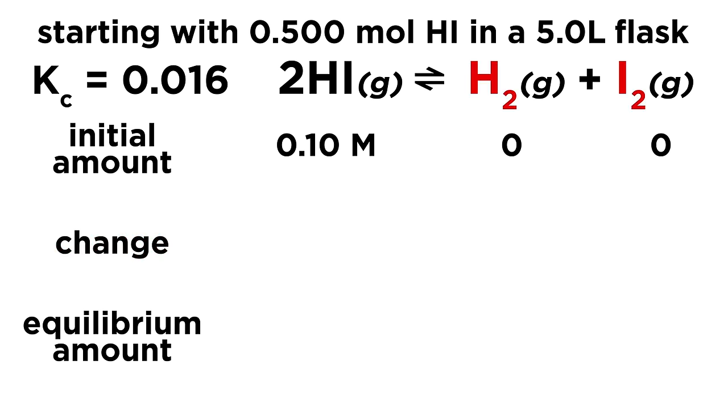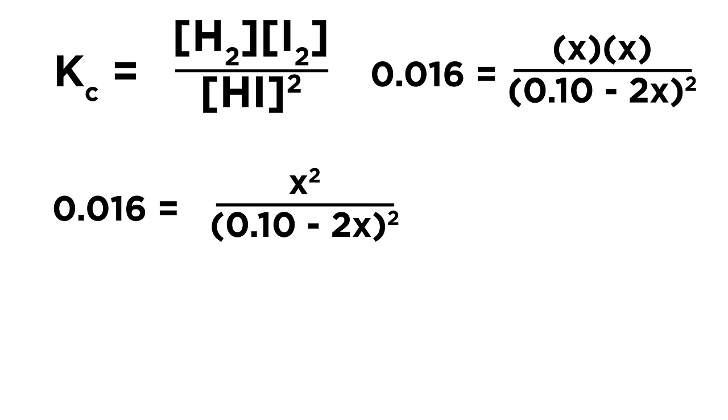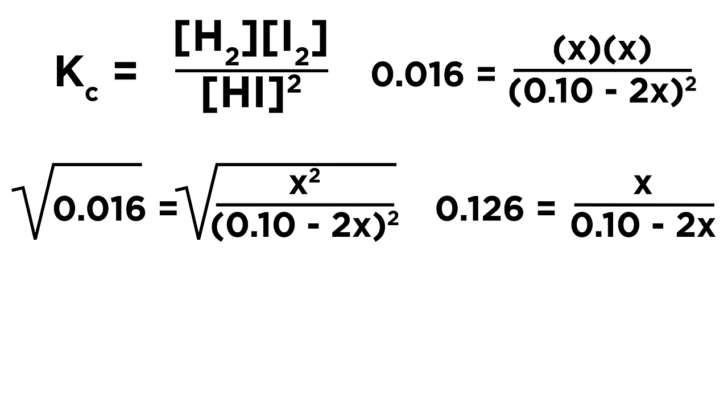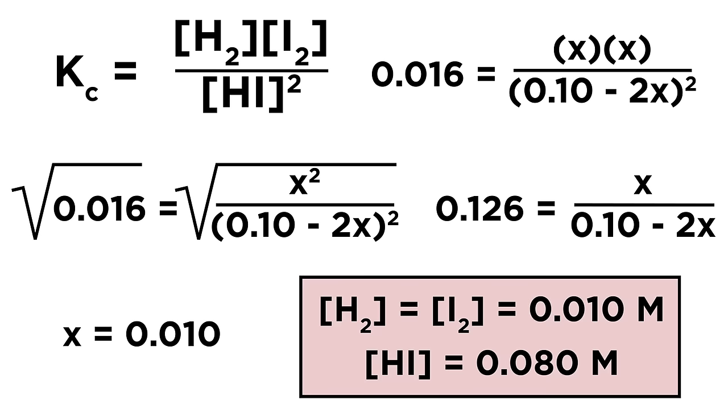For every two moles of reactant, we get one mole of each product, so we have to subtract two x here and add x here. Then equilibrium is just the sum of initial and change. Plug them into the equilibrium expression and solve for x. Luckily, on the right both the numerator and denominator are squared, so we can take the square root of both sides. If it wasn't this convenient, we may have had to use the quadratic equation. But as is, we can solve for x and use that to determine all the equilibrium concentrations. Let's check comprehension.